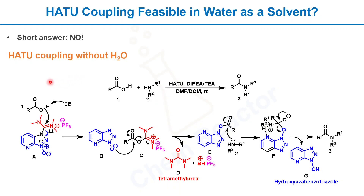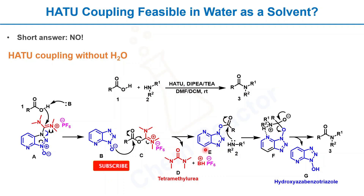First we'll see the reaction mechanism of H2 coupling without water. A base deprotonates the carboxylic acid, and the resulting carboxylate anion attacks the electron-deficient carbon on the H2 molecule. That generates the hydroxy azabenzotriazole anion and the activated ester. In the next step, this hydroxy azabenzotriazole anion reacts with the activated ester and forms another activated ester molecule.